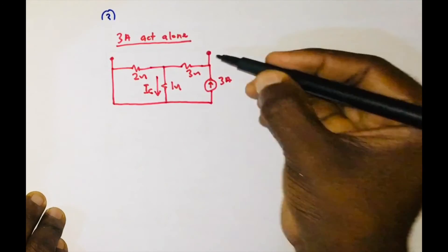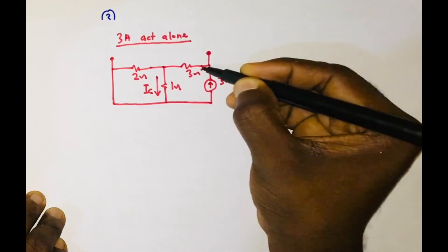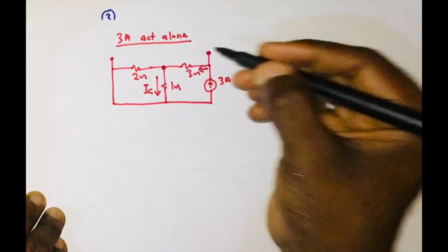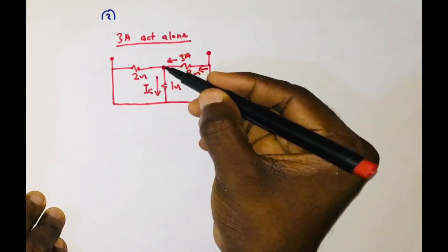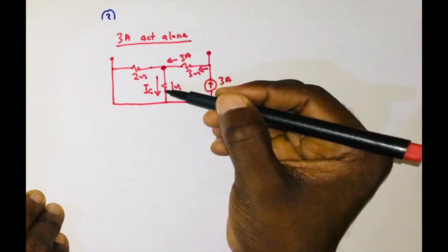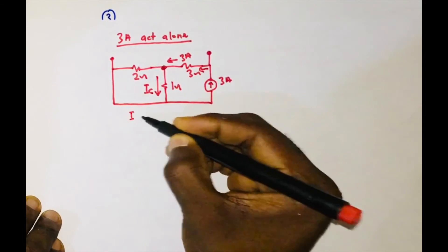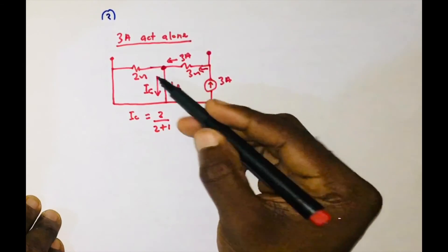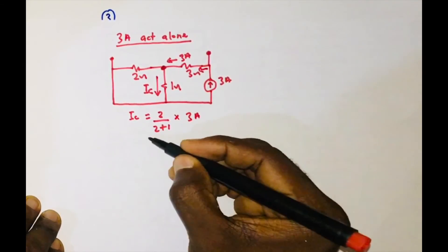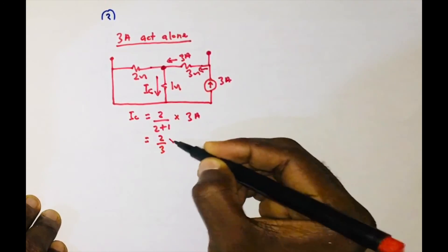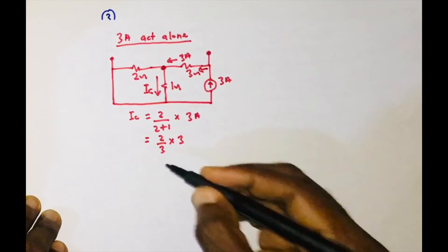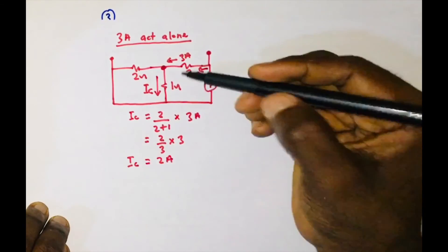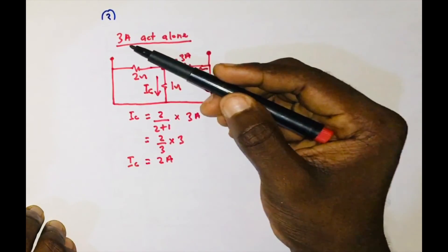The three amperes current flows in this direction. Because of the open circuit, it flows to this junction, and we split the current using the current division rule. IC equals two divided by two plus one, times three amperes. That is two divided by three times three. The threes cancel, giving IC equal to two amperes. That is the current flowing through the one ohm resistor when the three amperes current source is acting alone.